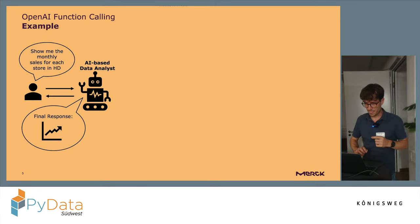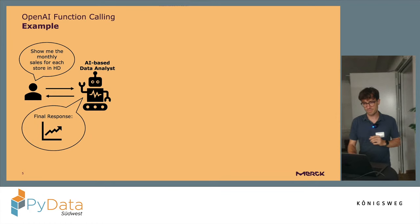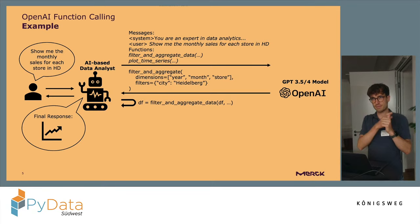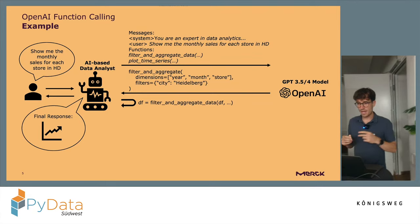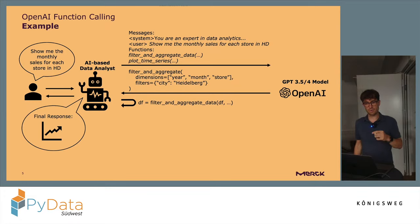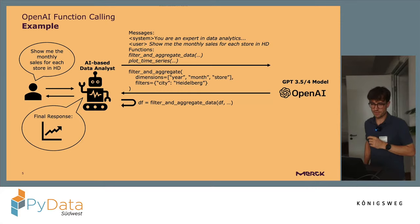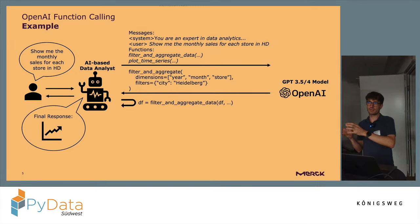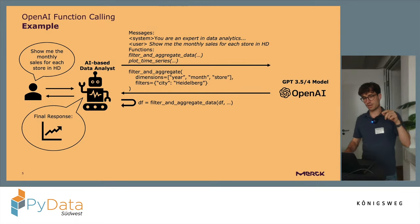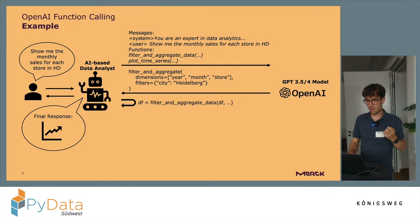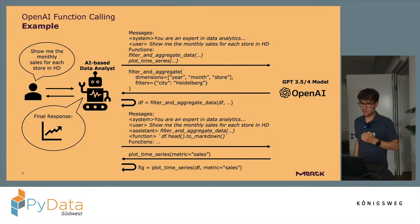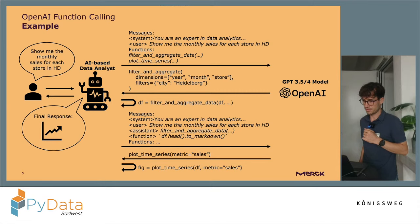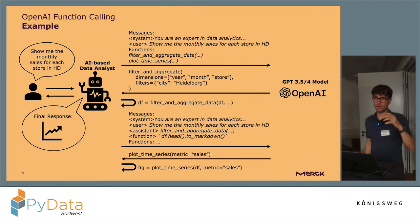To make this clearer, here's an action diagram. First, we send the system prompt, the user prompt, and the function specifications to the GPT model. It returns the filter_and_aggregate function name with arguments — year, month, and store as dimensions, and a filter for city equals Heidelberg. We then execute this function locally in our analyst. We send a next request with the full conversation history, including a markdown sample of the aggregated dataframe. The model then reasons that the next function to call is plot_time_series with the metric sales. We run that function locally, and finally show the generated figure in the chat window.